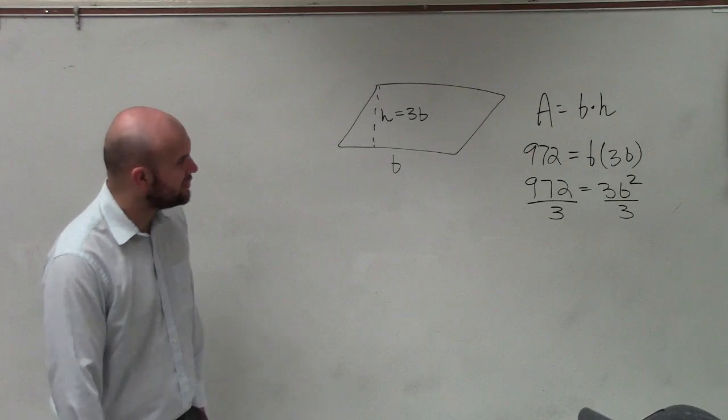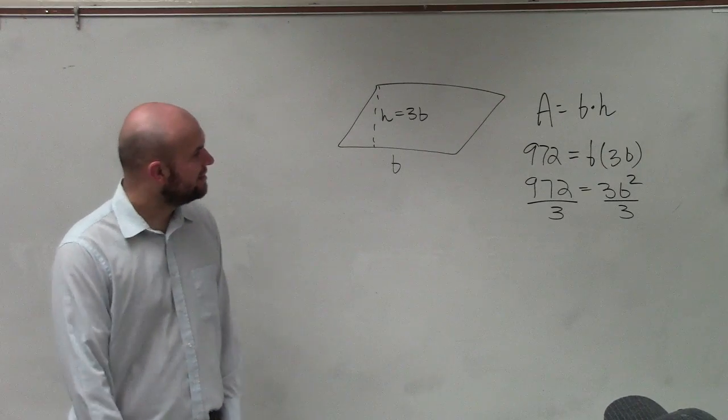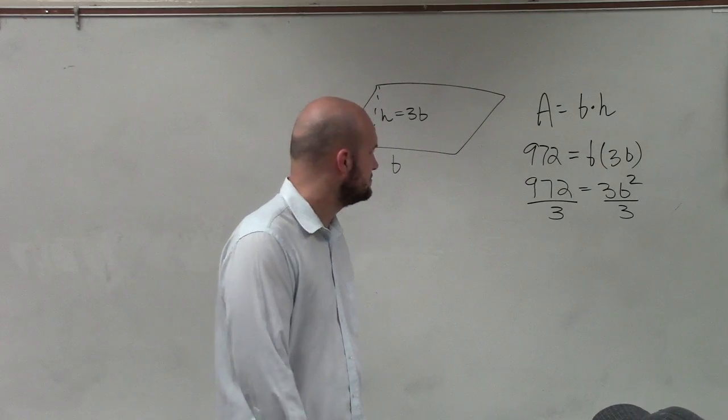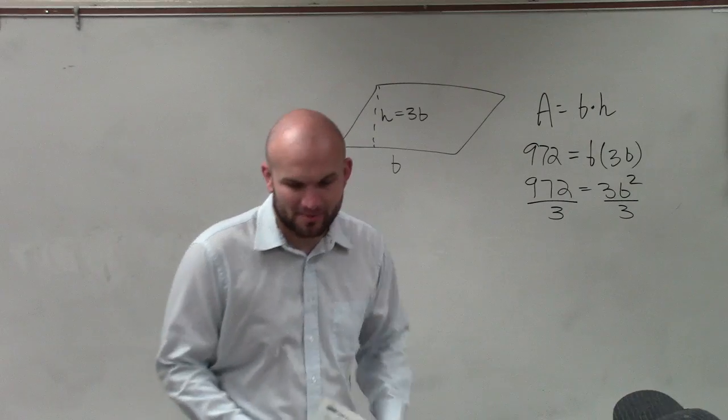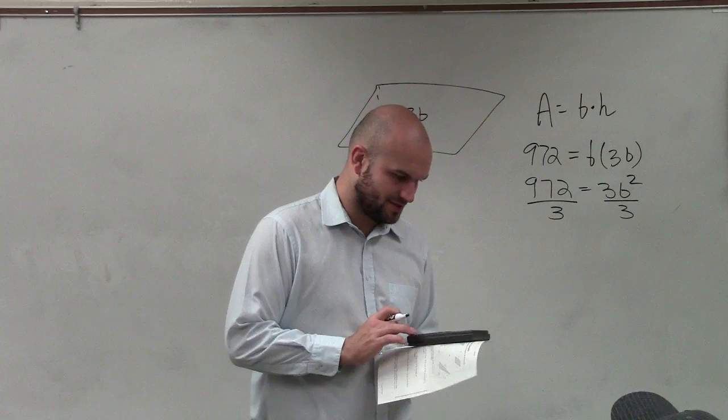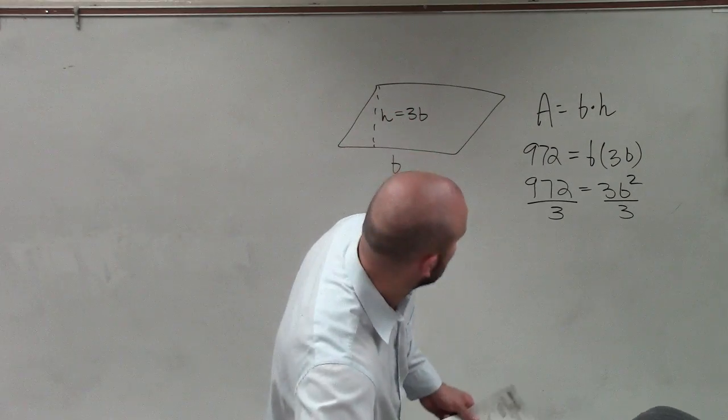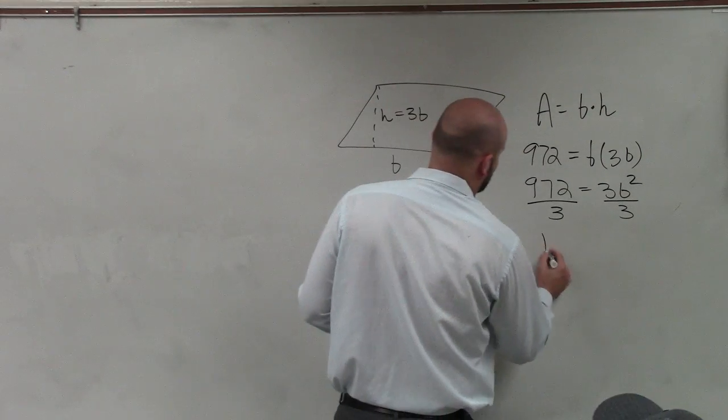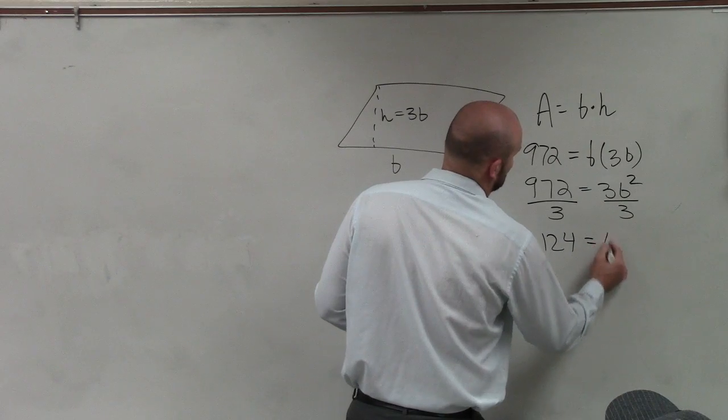So that 972 divided by three. I should be able to do this in my head, which I know it goes into, I just can't think right now, 124. So 124 equals b squared.